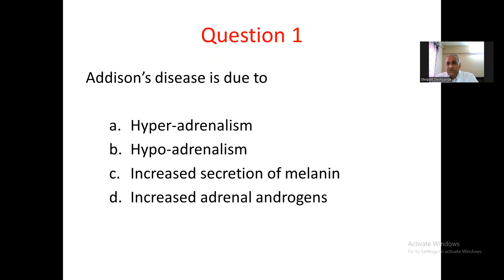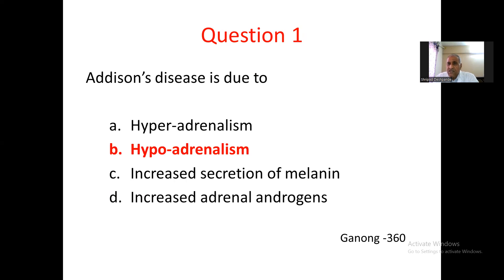Question number 1. Addison's disease is due to: A. hyperadrenalism, B. hypoadrenalism, C. increased secretion of melanin, D. increased adrenal androgens. As we know, hyperadrenalism produces Cushing's syndrome. Increased melanin may occur due to increased melanocyte stimulating hormone in hyposecretion, but that is not the main thing. Increased adrenal androgens relate to virilism, which is another aspect. The answer is hypoadrenalism.